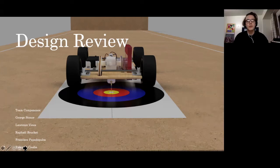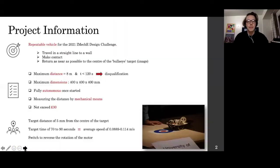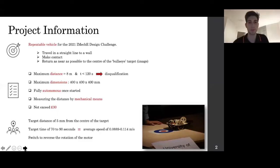Hello and welcome to our repeatable vehicle presentation. This project is part of the 2021 IMAKI design challenge, which is to create a repeatable vehicle. The vehicle should travel in a straight line to a wall, make contact, and then return to as near as possible to the bullseye target as presented in the image.